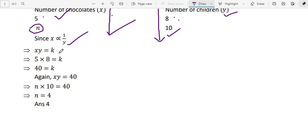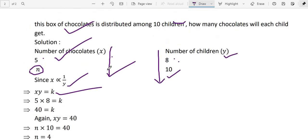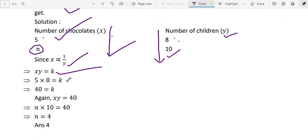So since X is inversely proportional to Y, so XY equal to K, constant. So first time, what are the values? 5 and 8. So 5 into 8 equal to K. 5 into 8 is 40 equal to K. Second time, again, XY equal to 40 because already we got 40. So N, X is not given, so we have written N and Y is given 10.